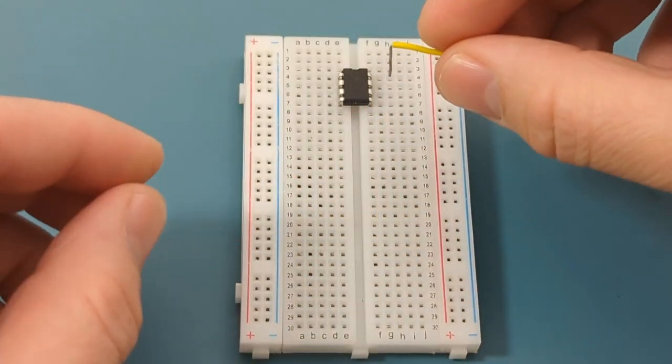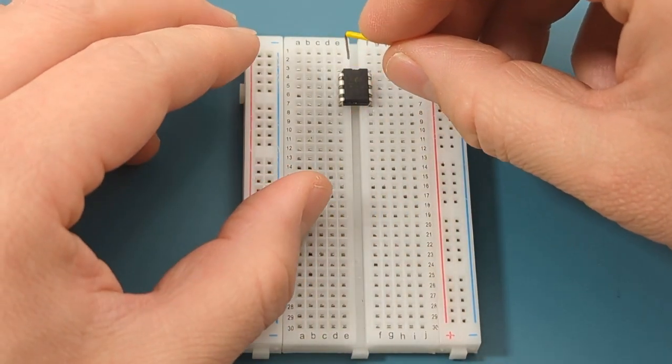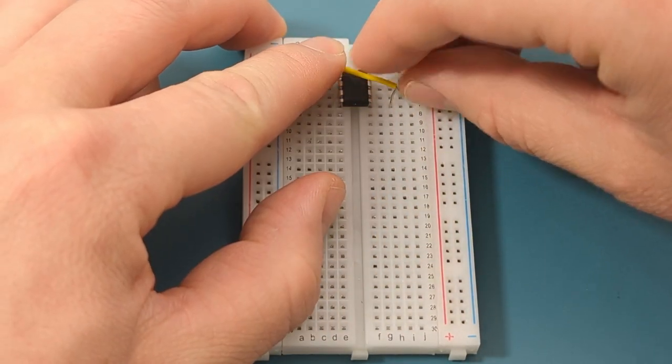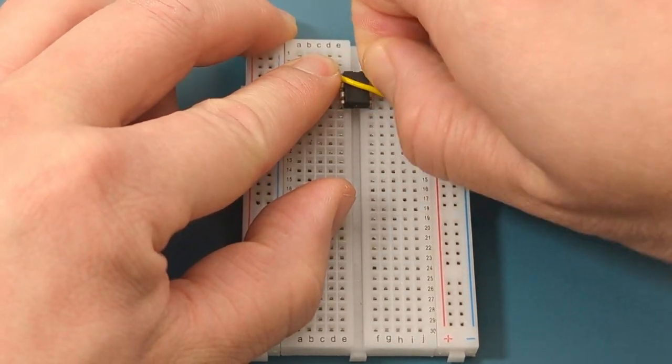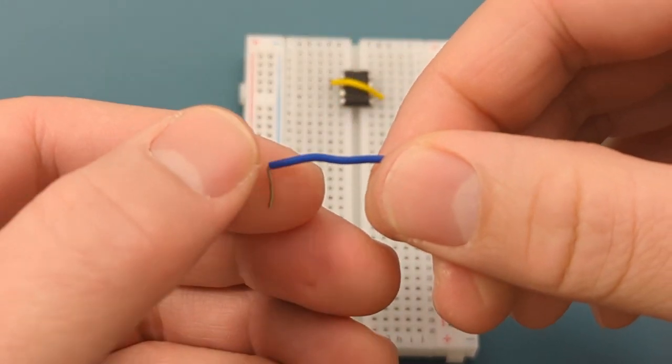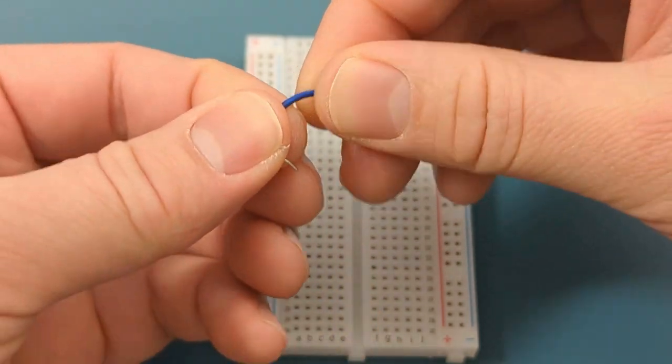Use a jumper wire to connect pin 2 or trigger to pin 6 or threshold. Use a jumper wire to connect pin 4, or reset, to pin 8 or VCC.